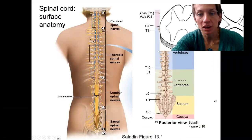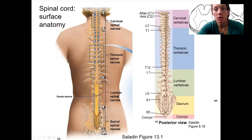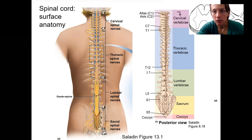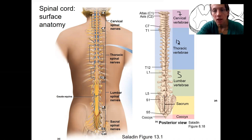If you remember from learning the vertebral column in lab, we learned about the various vertebrae. There are seven cervical vertebrae, 12 thoracic vertebrae, and five lumbar vertebrae. There are also five fused vertebrae that make up the sacrum, and the coccyx is the bone below that. The spinal nerves arise from sections of the spinal cord that are embedded within the vertebral column.